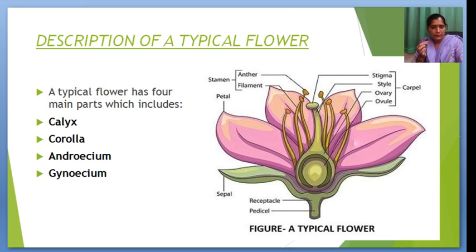Next is the description of the typical flower. The flower has four main parts, which include calyx, corolla, androecium, and gynoecium.